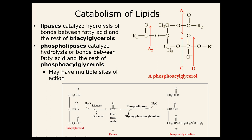Some terminology that will come up: lipases will be important. Those are the types of enzymes that will split the fatty acids off of the glycerol backbone. And then you have phospholipases, which catalyze the hydrolysis of bonds between the fatty acid and the rest of the phosphoacylglycerols. So lipases will play a big role — just think of them as being able to split the bonds between the fatty acid and the glycerol backbone.